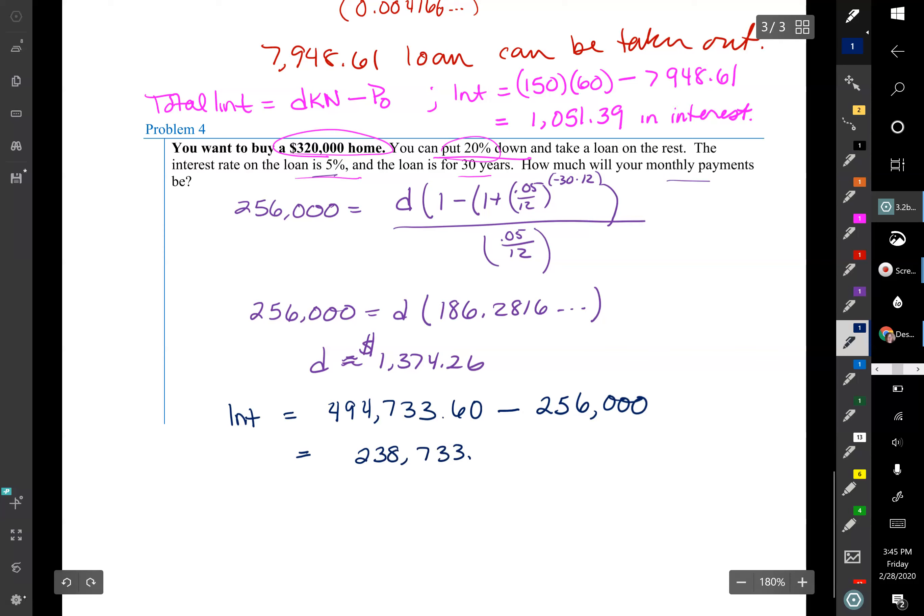And then that is going to equal overall we would have $238,733.60 in interest. I think, oh my gosh, why would I ever want to do that? Well, you want to have a house. I mean you get to pay rent anyway, and the lower percentage you can get and the less you can take a loan out for the better. But it is hard to come up with all that money in the first place.